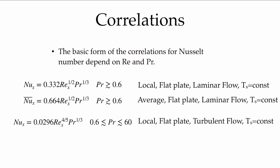We also see another one, also a function of the Reynolds number and the Prandtl number, for now a turbulent flow over a flat plate with constant surface temperature. Notice the constants changed quite a bit, and the exponent on the Reynolds number changed, and also the conditions over which the correlation is valid.